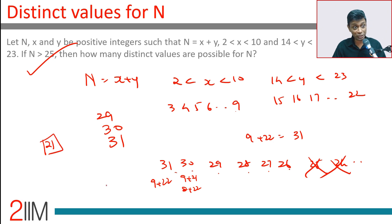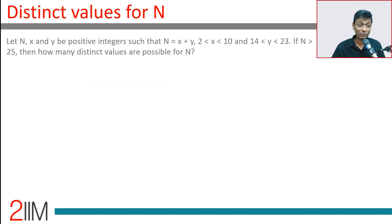Fine. Lesson one is: read the question clearly. The question is not saying how many possible values are there for x and y. Think - how many possible values are there for N? That's your six values, 26 to 31. Done. Fine, so be careful.